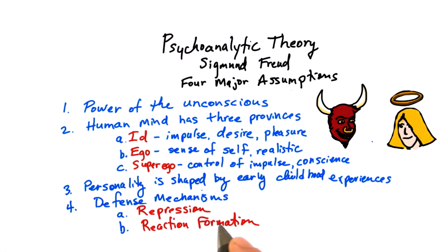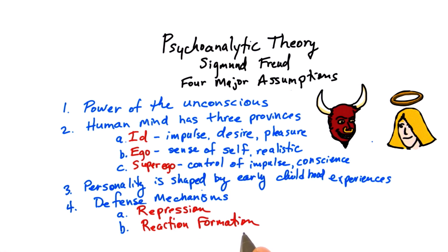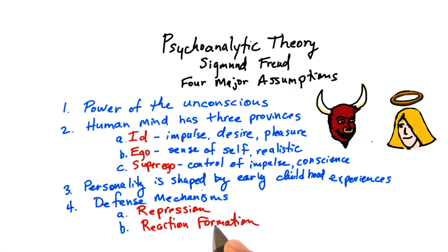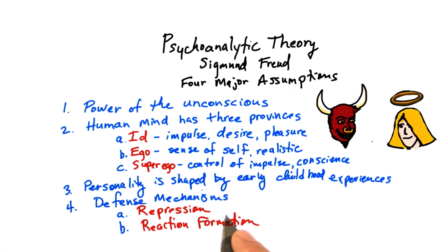Two of the better-known defense mechanisms Freud discussed were repression and reaction formation. In repression, we keep threatening ideas, thoughts, and feelings out of consciousness — mainly sexual and aggressive impulses.